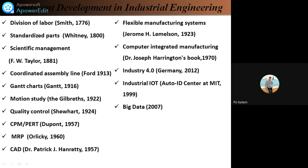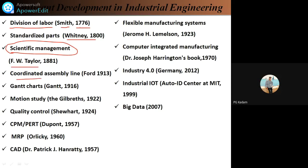This slide shows significant developments in industrial engineering. Division of labor was introduced by Adam Smith in 1776. Standardized parts were introduced by Whitney. Scientific management — very important even today — was introduced by F.W. Taylor, the father of scientific management. Other developments include the coordinated assembly line, motion study, quality control, and CPM (Critical Path Method), introduced in 1957.